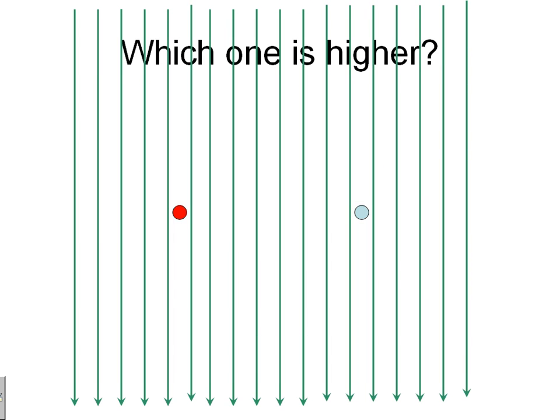But if the gravitational field is like this, then the blue ball is higher, and the red ball is lower. What about this gravitational field? Well, in this case, they are exactly at the same height.